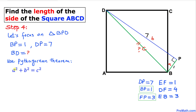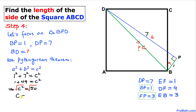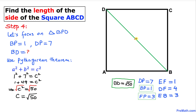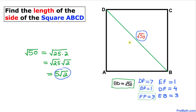Filling in the values: 1² + 7² = c², which gives us 1 + 49 = c², so c² = 50. Taking the square root, c equals √50. Therefore BD equals √50, which simplifies to 5√2.